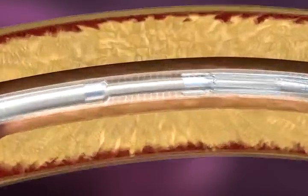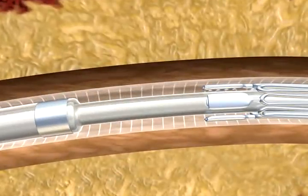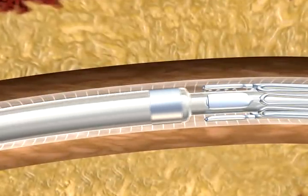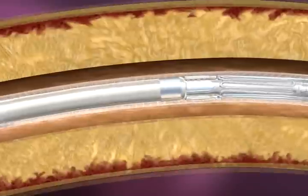Advance the inner body of the delivery system until the proximal marker band bumper is just proximal to the stent. This prepares the stent for deployment.